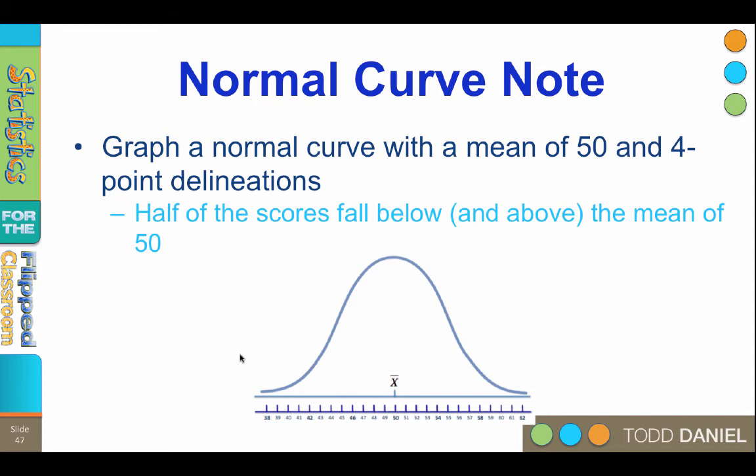So then we could lay out a number line with four point delineations. Half of our scores will always be above the mean, or above 50. The remaining half of the scores will always be below 50. That is what a measure of central tendency tells us. It is the point at which half of the scores fall above and half of the scores fall below.